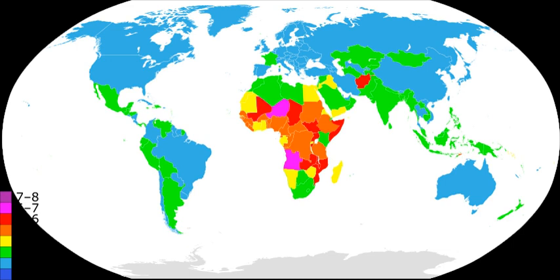He also outlined the idea of 'positive checks' and 'preventative checks.' Positive checks, such as diseases, war, disaster, famine, and genocide are factors that Malthus considered to increase the death rate.